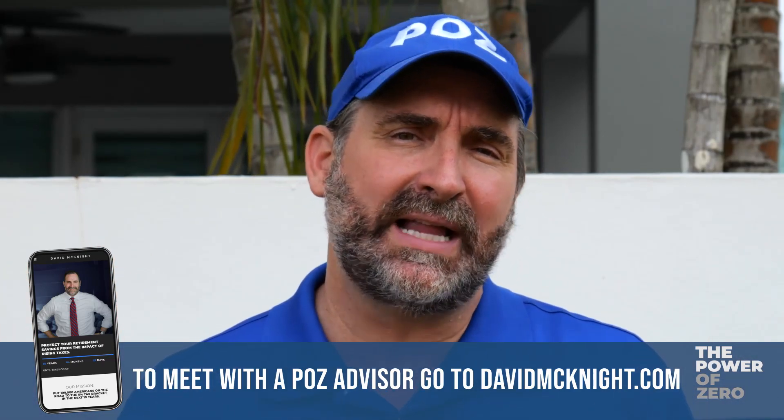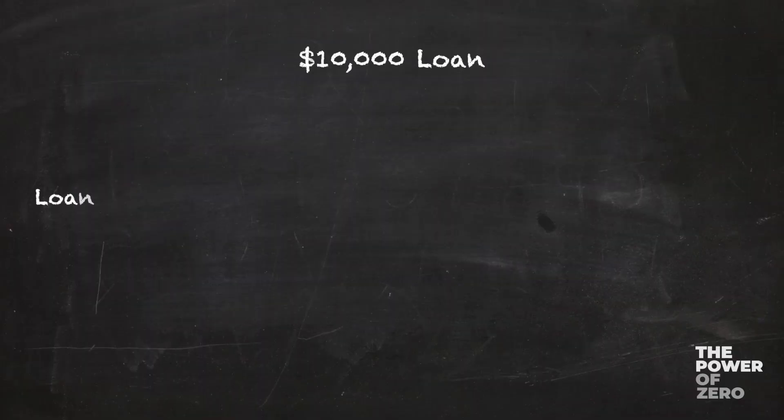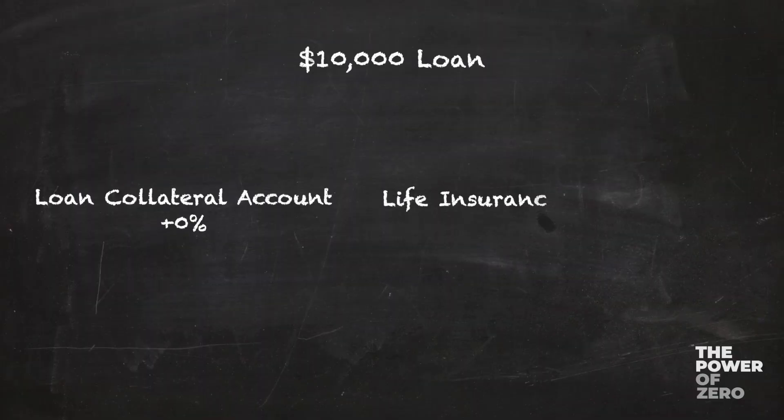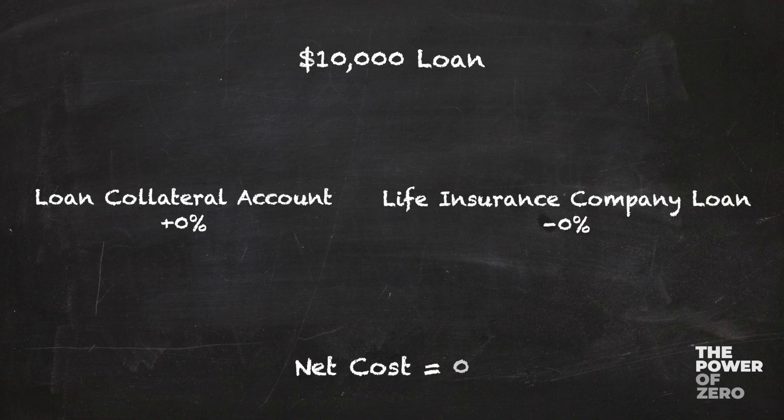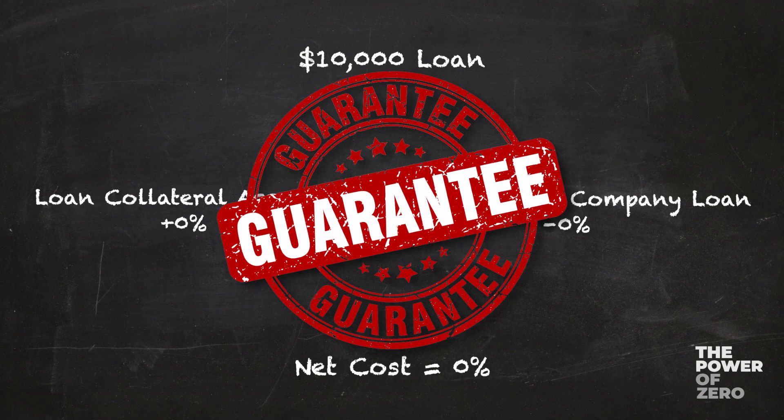The best way to protect yourself against lousy loan provisions is to make sure that the company sponsoring your IUL gives themselves as little wiggle room as possible. In a perfect world, you want the amount they credit your loan collateral account and the amount they charge for loans to always add up to zero. If they can slap a guarantee on that provision, all the better. If a company guarantees they will always credit your loan collateral account at 3% and guarantees they will always charge your loan account 3%, then the net cost to you will always be 0% — tax-free and cost-free, guaranteed right in the contract. Remember, it's always tax-free per the IRS, but the cost-free part is up to the insurance company.